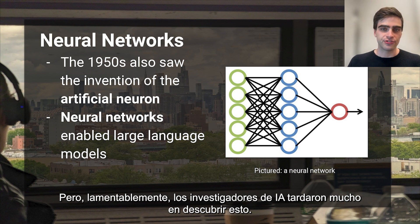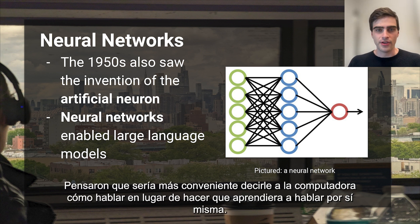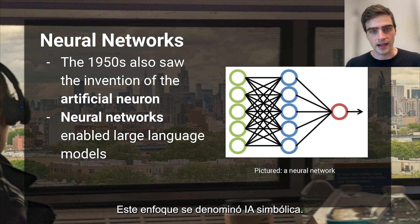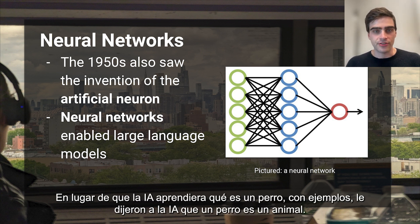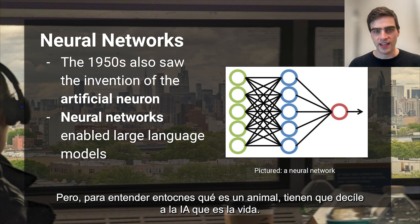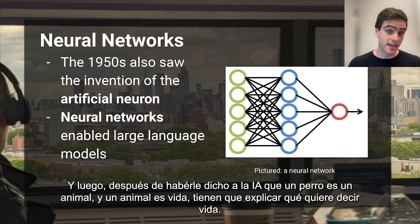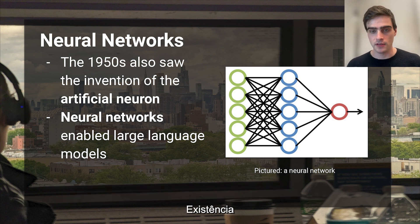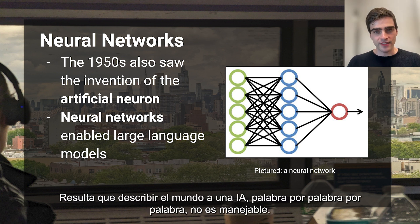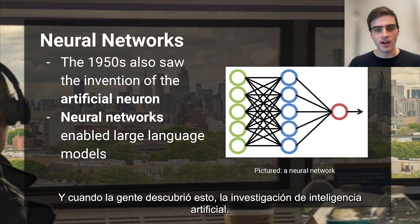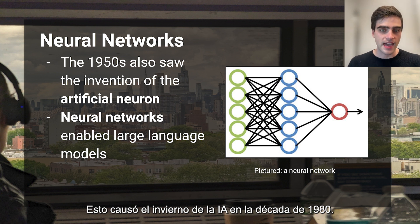Unfortunately, it took AI researchers a long time to discover this. They thought it'd be more convenient to tell the computer how to speak rather than have it learn to speak for itself. This approach was called symbolic AI. Rather than the AI learning what a dog is via examples, they tell the AI a dog is an animal. But to understand what an animal is, they then have to tell the AI that it's life, and then explain what life means — existence. It's a never-ending loop. Describing the world to an AI, word by word by word, is not tractable. And when people figured this out, artificial intelligence research halted. This caused the AI winter of the 1980s.